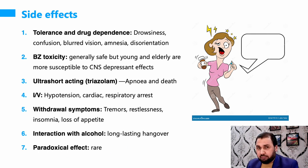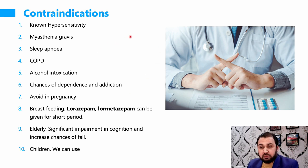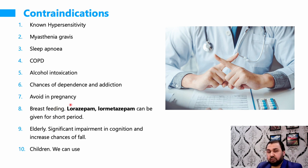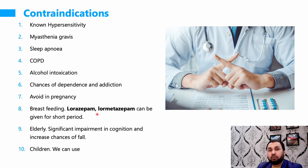Contraindications: always start with hypersensitivity, then myasthenia gravis, sleep apnea, COPD, alcohol intoxication, and risk of dependence and addiction — in cases of chronic anxiety, give for a short time only. In pregnancy, ideally avoid, but can be given for a short period in small doses. In breastfeeding, it can pass into breast milk in sufficient amounts, so ideally avoid. Lormetazepam (Noctamide) may be used for a short period as only small quantities transfer into breast milk.